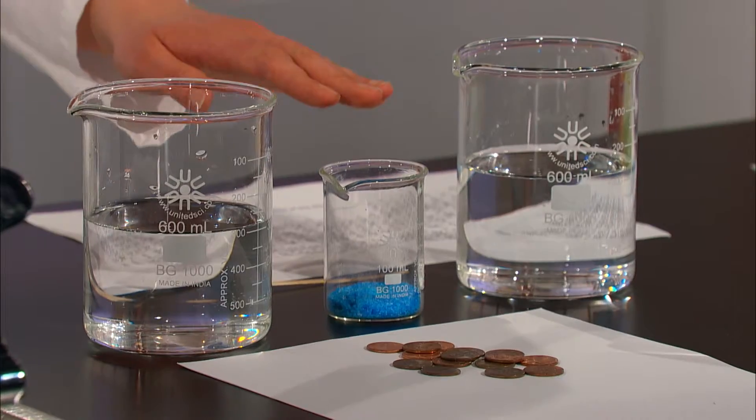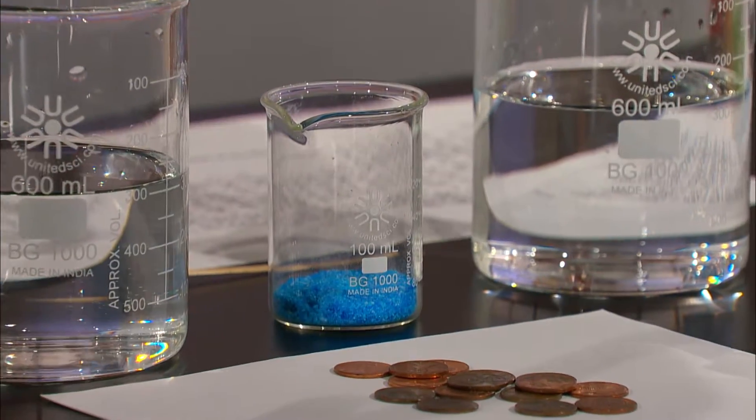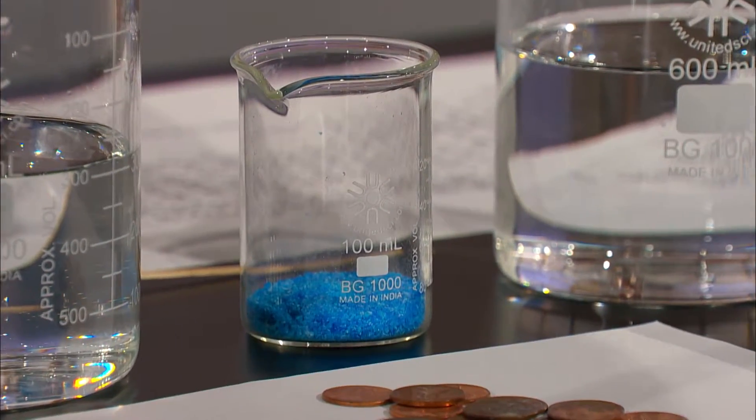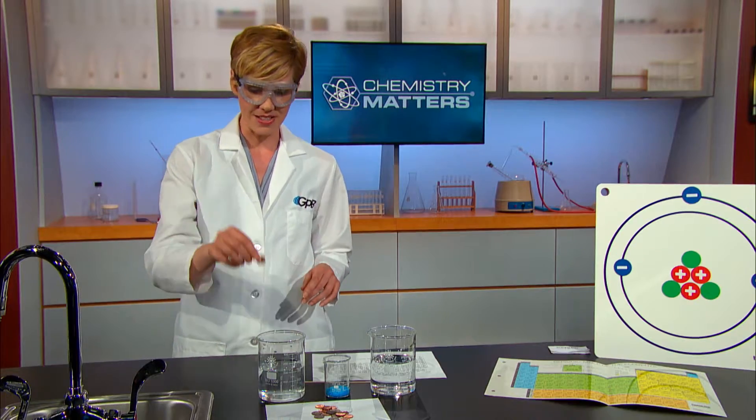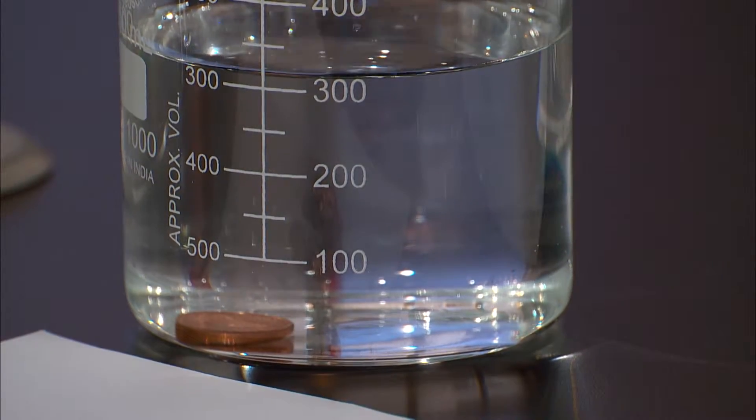This blue crystal is copper sulfate. Instead of being neutral, the copper in copper sulfate is a 2-plus cation. I'm going to drop a penny into the water, and then I'll add the copper sulfate. Watch this.